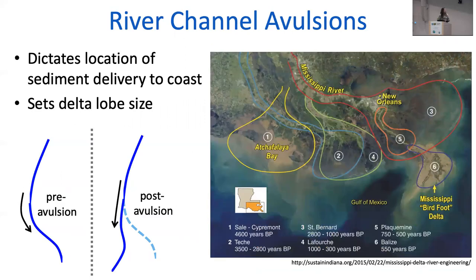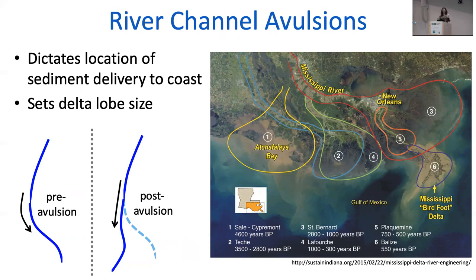River channel avulsions are a natural process that happens on deltas. By channel avulsions, I simply mean that rivers are just changing course relatively rapidly. These deltaic landscapes are built through the stacking of different lobes, and the way that these lobes form along the shoreline is through these repeated channel avulsions that redistribute where sediment is going to be deposited. For the case of the Mississippi, you can see that over the past few thousand years there have been a number of different channel avulsions that have caused these different lobes to stack upon one another.